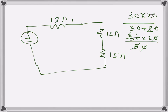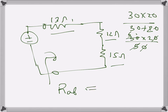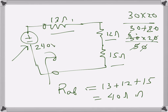I need to find the resistance seen at terminals A and B, so I open this and find the equivalent resistance R_ab. It is the sum of these three resistances: 13 ohms + 12 + 15 = 40 ohms. That is the resistance seen at R_ab, or the equivalent resistance that the power supply experiences.